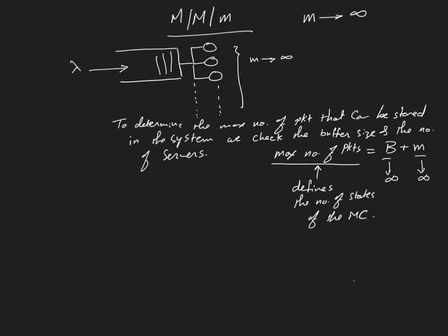The Markov chain states for any queuing system simply represent how many packets exist inside the whole system. To understand this, refer to the bank example: when you go inside a bank, the total number of people in the banking system is the number standing in the queues plus the number at the counters (the servers). In data networks, packets play the role of customers.